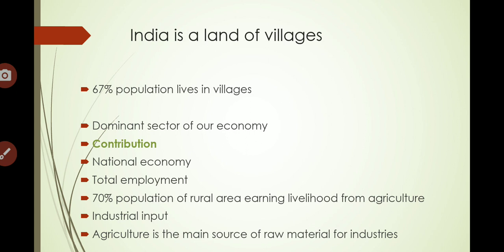Nearly 70 percent of the rural population earns its livelihood from agriculture. Then there is the contribution in industrial input — most industries depend on the raw material produced by agriculture, so agriculture is the principal source of raw material to industries.